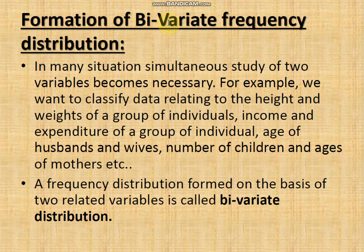In many situations, simultaneous study of two variables becomes necessary. For example, you want to classify data relating to height and weight of a group of individuals. This example pertains to body mass index, where height and weight both are considered — for a particular height, what should be the weight of that individual.